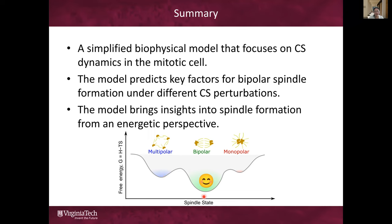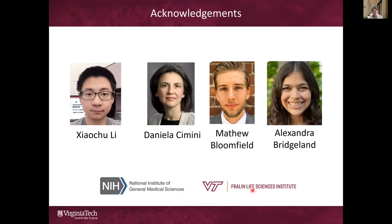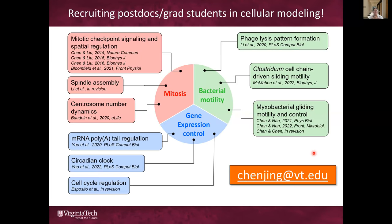The bipolar case is energetically favored in a regular scenario, but if there's some perturbation to the system, the energy profile can tilt, and then multipolar or monopolar spindle would be favored in those cases. I would like to thank Xiao-Chi Li, the graduate student who did all the mathematical modeling, and our experimental collaborator Daniela Cimini from Virginia Tech, whose graduate student Matt Bloomfield and undergraduate student Alexandra Bridgeland did the experiments. We are also recruiting postdocs and graduate students for multiple topics. Thank you, and I'll take questions.